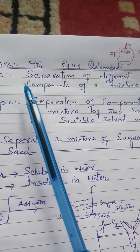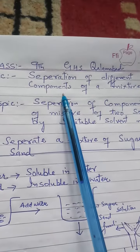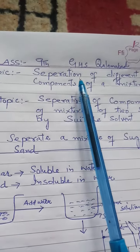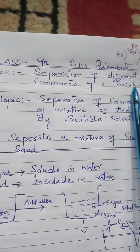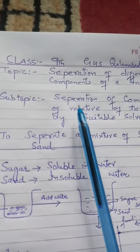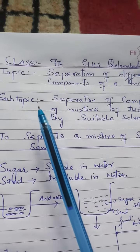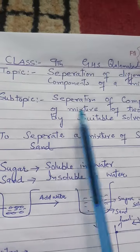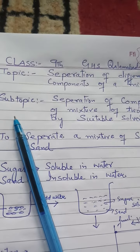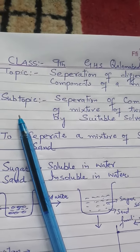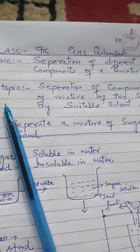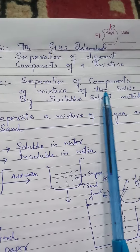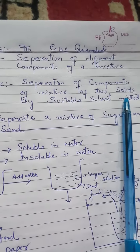A mixture may consist of two components or more than two components. A mixture may be of two solids, a mixture may be of two liquids, or a mixture may be of a solid and a liquid. Today let us learn how we can separate the different components of a mixture which consists of two solids — a solid-solid mixture.